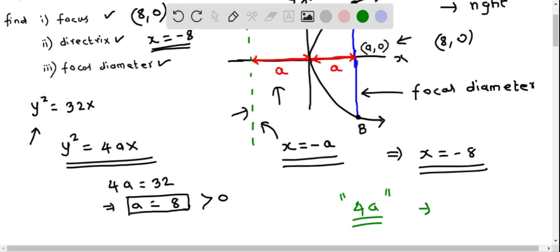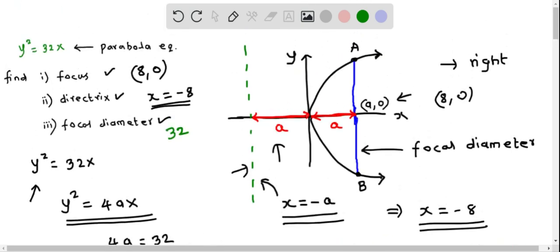Basically, we have to find the distance AB, and it is given by the formula 4a. The focal diameter formula is 4a, which means we substitute a = 8, so 4 × 8 = 32. This length AB is 32.